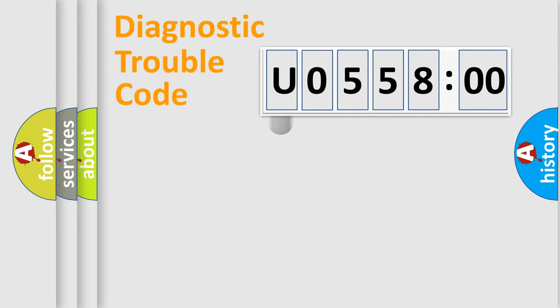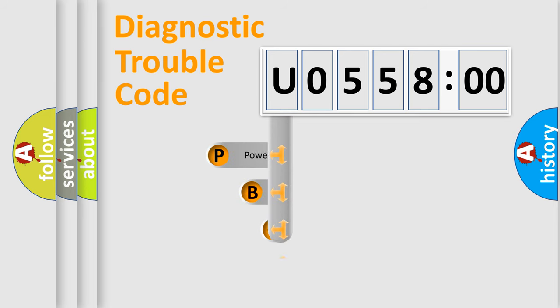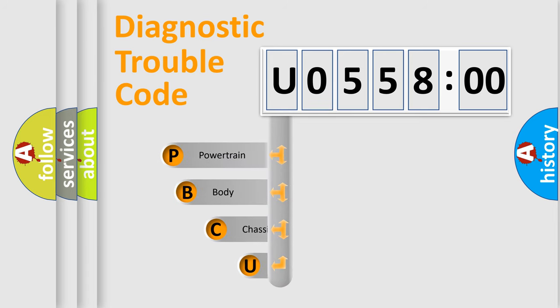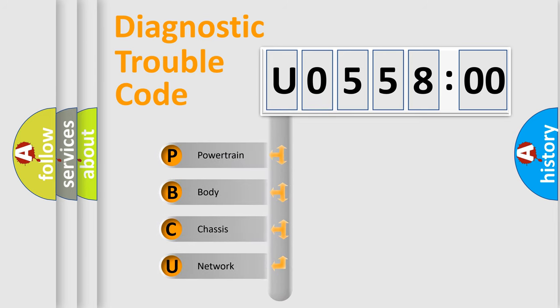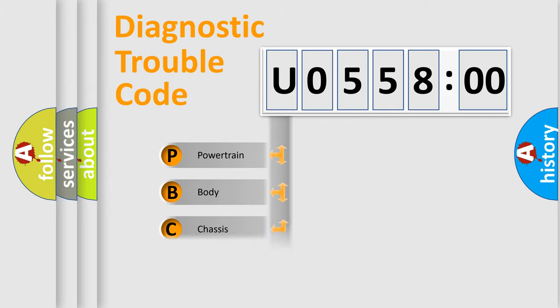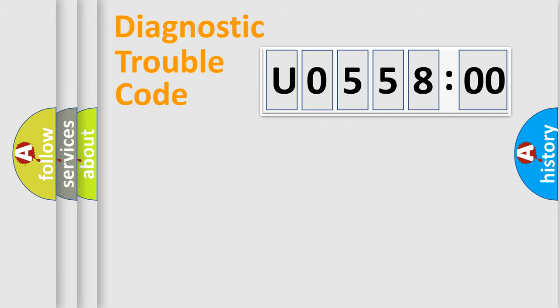First, let's look at the history of diagnostic fault code composition according to the OBD2 protocol, which is unified for all automakers since 2000. We divide the electric system of an automobile into four basic units: Powertrain, Body, Chassis, and Network.